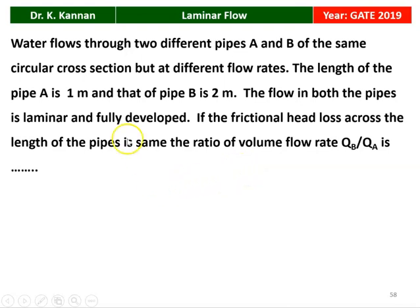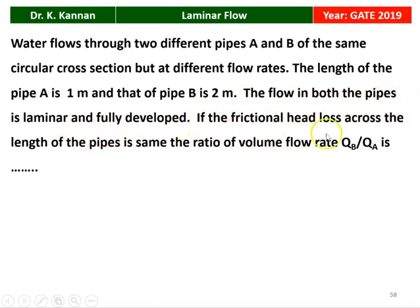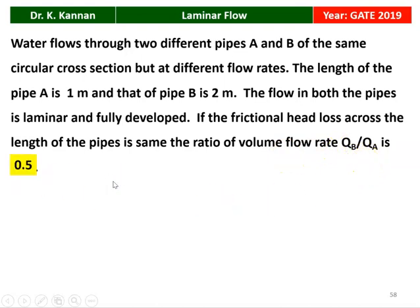The next question from the GATE 2019 question paper. Water flows through two different pipes A and B of the same circular cross section but different flow rates. The length of pipe A is 1 meter and pipe B is 2 meter. Flow in both pipes is laminar and fully developed. The frictional head loss across both pipes is the same. Find the volume flow rate ratio QB by QA. The answer is 0.5.